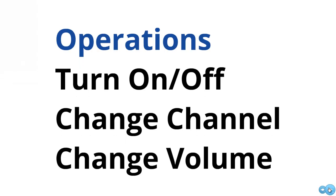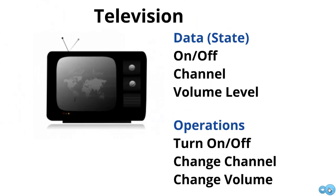In terms of operations, we can imagine being able to turn off the television, or turn on the television, to change the channel, to change the volume. So now we're actually able to manipulate the state information associated with the television. This is what we need to think about when modeling a television in terms of a class — its data and its operations.